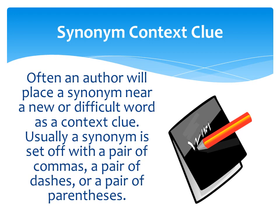Often an author will place a synonym near a new or difficult word as a context clue. Usually, a synonym is set off with a pair of commas, a pair of dashes, or a pair of parentheses. Example signal words for synonym context clues include: or, in other words, that is, also known as, and sometimes called.